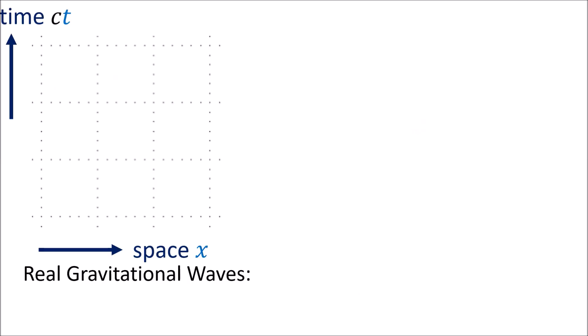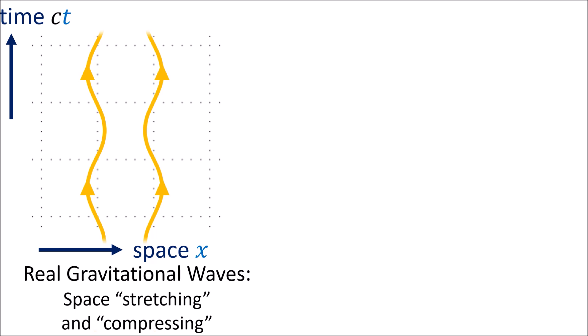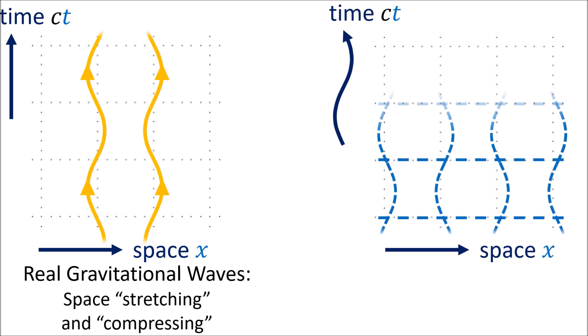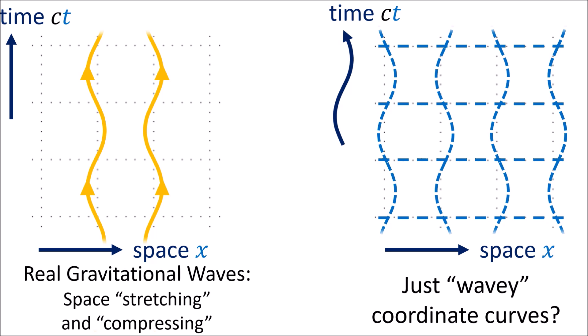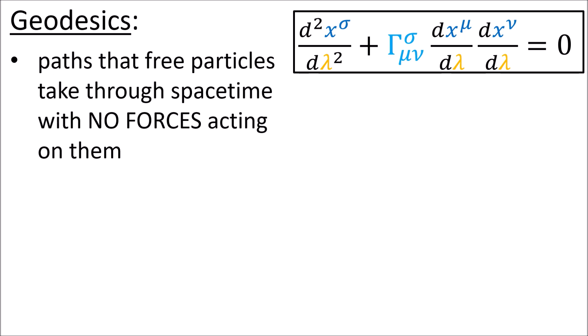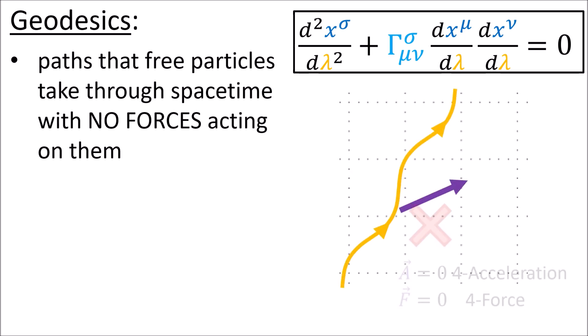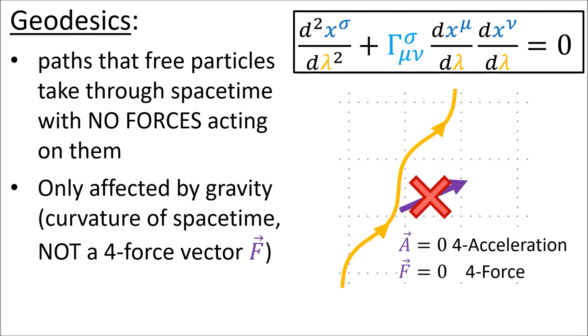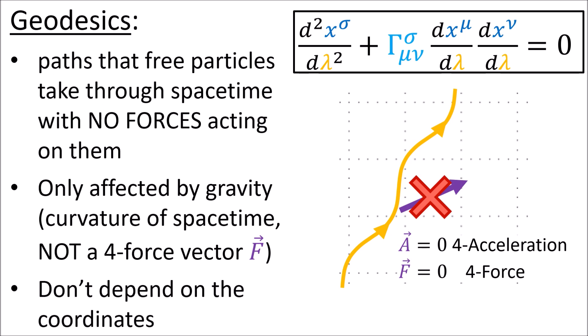With real gravitational waves, we'd expect the world lines of two nearby free particles to wave back and forth as space stretches and compresses due to the gravitational wave. But it could be possible that this wave equation actually just describes wavy lines in the coordinate system. We can tell the difference between real gravitational waves and wavy coordinates. Recall that geodesic world lines, described by this equation here, are the paths that free particles take through spacetime when no forces are acting on them. The shape of geodesics is only affected by gravity, which is the curvature of spacetime itself, not a four-force vector that's pulling on the particle. And geodesics don't depend on coordinate systems.